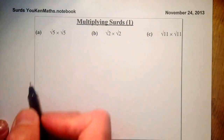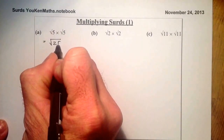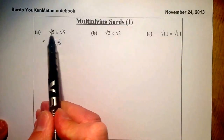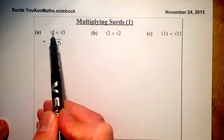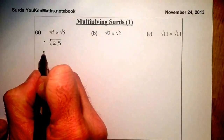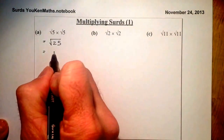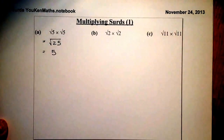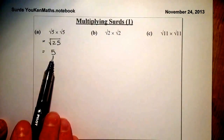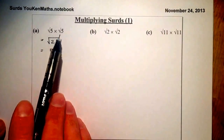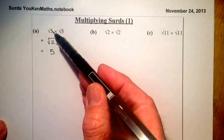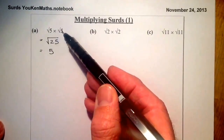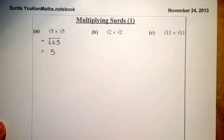Looking at the first question, I've got root 5 times root 5. Root 5 times root 5 gives me root 25, so I'm just combining the numbers together when I multiply them. Root 5 times root 5 gives me root 25. From there I can simplify that down — 25 is a square number, so the square root of 25 is just 5. Root 5 times root 5 gives me 5. Any number inside the root times itself just brings that number out.